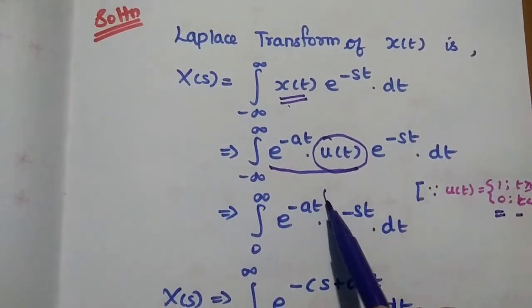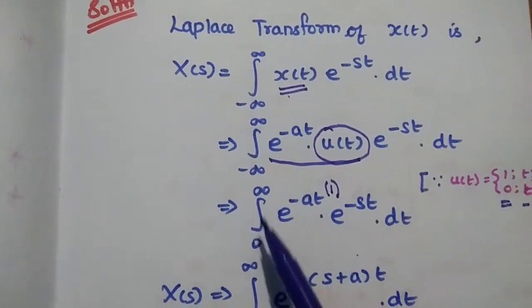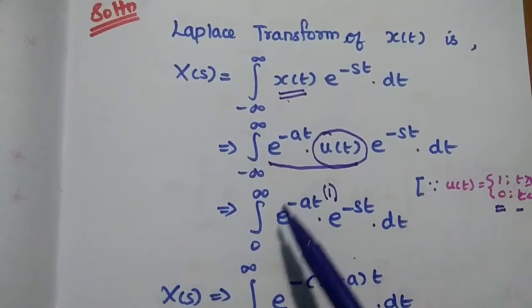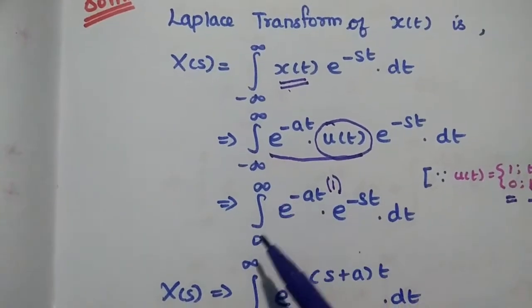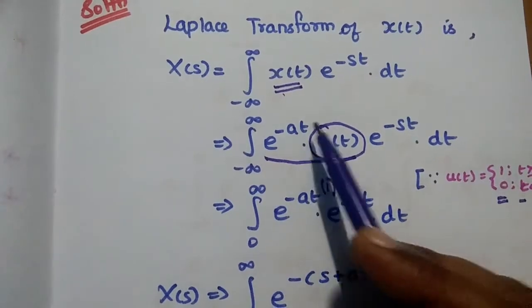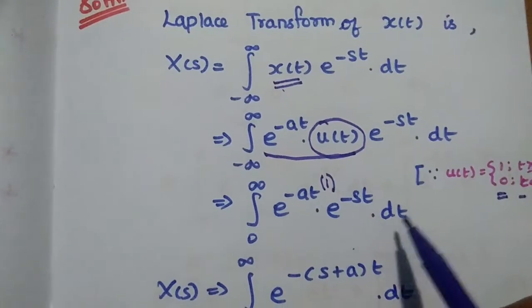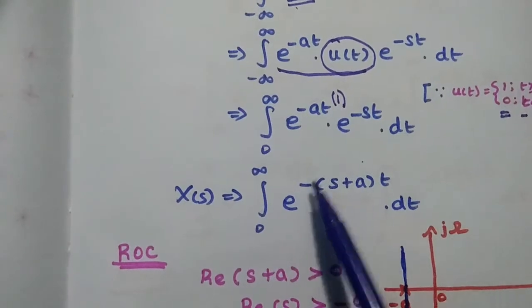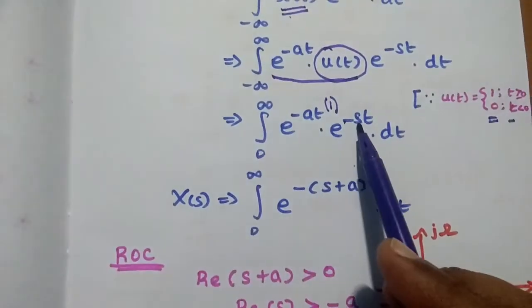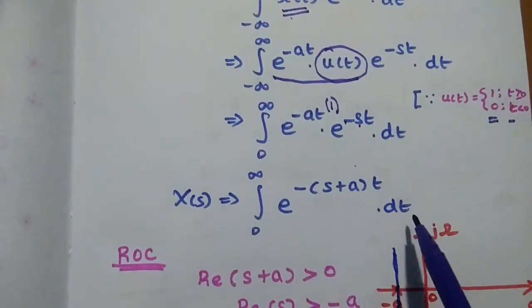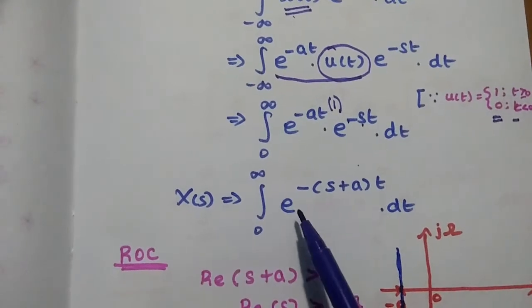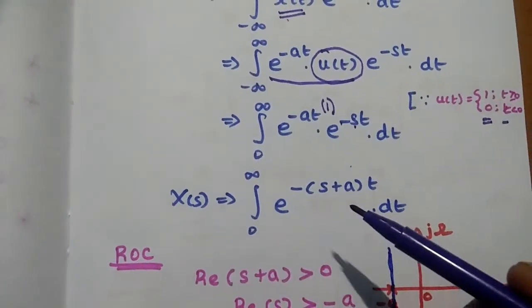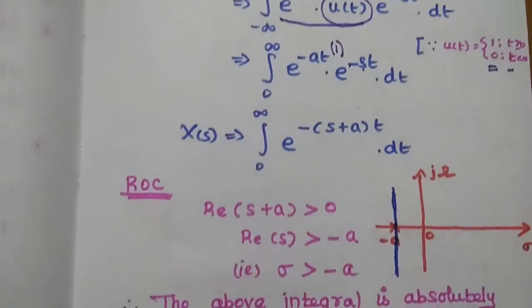Whenever u(t) appears in the problem, in the next step we change the limit from 0 to infinity. So we have the integral from 0 to ∞ of e^(−at)e^(−st)dt. We combine this term: e^(−(s+a)t)dt. After simplifying this expression, just before taking the integration, we find the ROC.